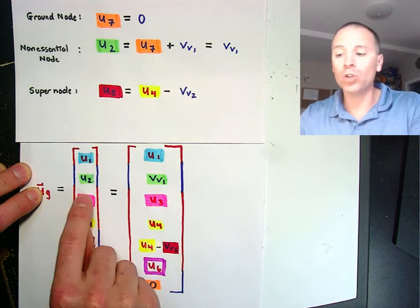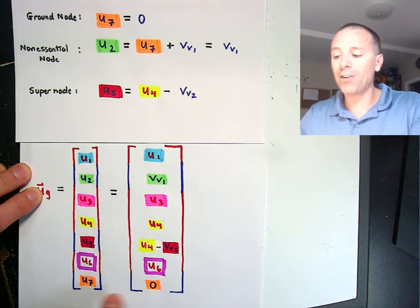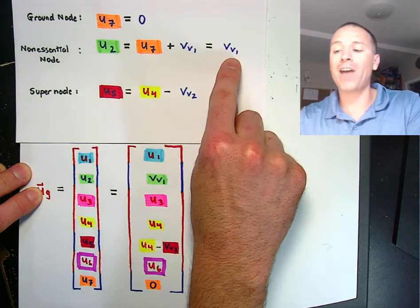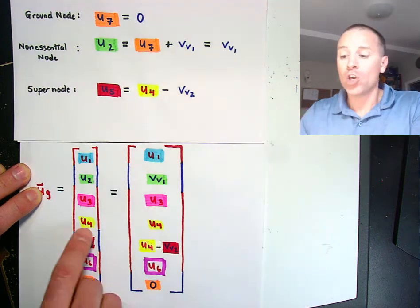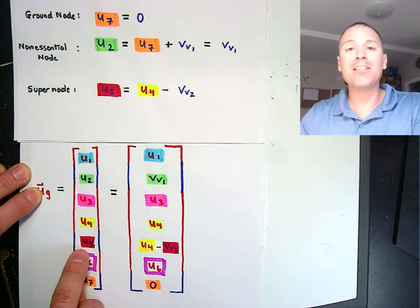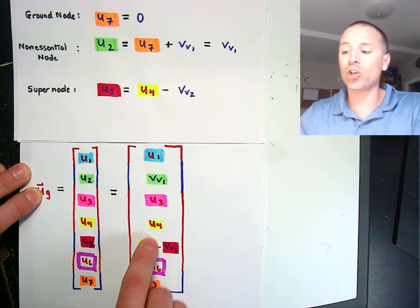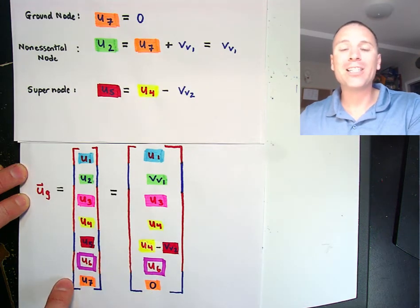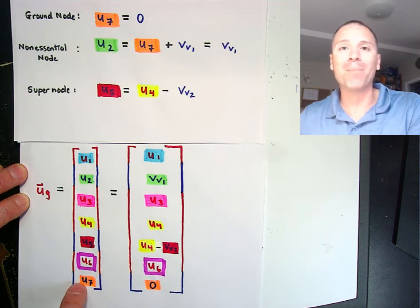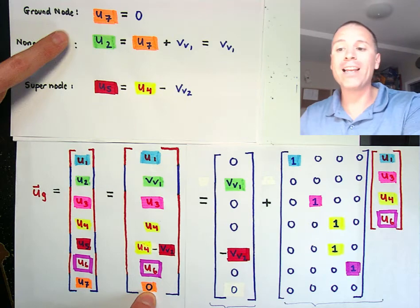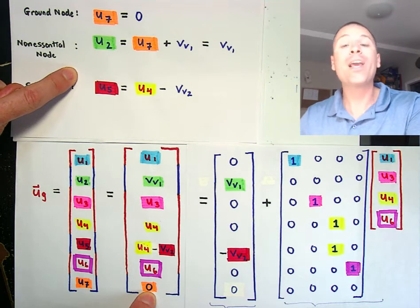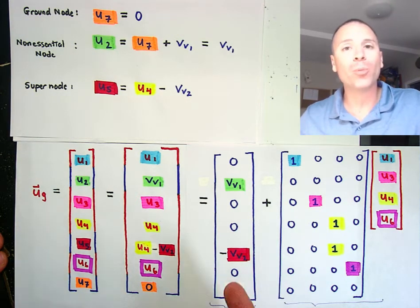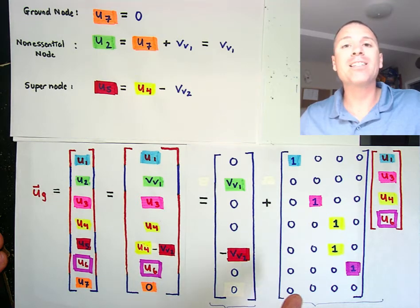We can write each individual element of u sub g out and eliminate the ones that are dependent. Specifically, u2 was a function of u7; u7 was set to zero, which means u2's value is immediately known — it's non-essential. u5 was a function of u4, so the fifth entry is now in terms of u4. Node seven was grounded so it disappears. From the original seven potentials we've now reduced to four unknown potentials from which all others can be calculated. This alternative mechanism of writing the dependent information can be rewritten in a more linear algebraic form: a particular solution plus something that sends the matrix a sub vg to zero.